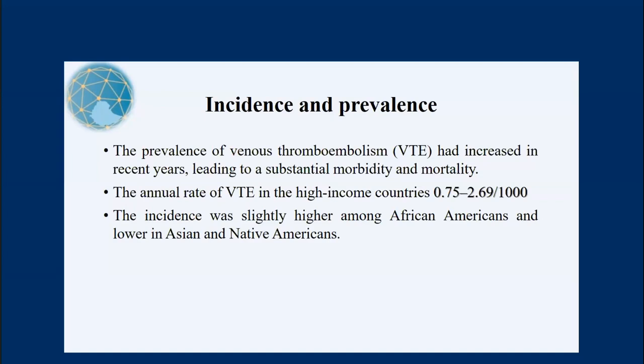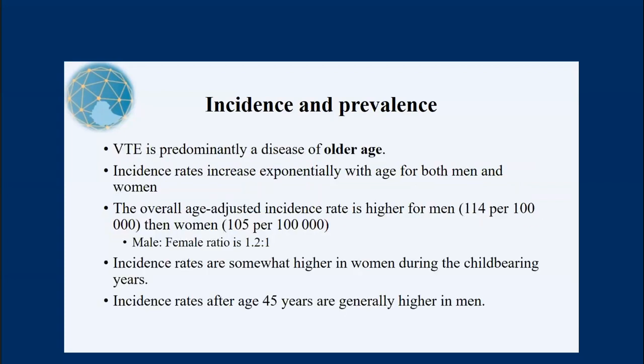Regarding our country, there are different literatures, but in general the incidence of VTE is not currently well known. Venous thromboembolism is predominantly a disease of older age — prevalence and incidence increase as age increases. Regarding sex ratio, the age-adjusted incidence rate is higher in males compared to females at a 1.2 to 1 ratio. The incidence is somewhat higher in women during childbearing age, but after age 45, males are more highly affected by venous thromboembolism events.